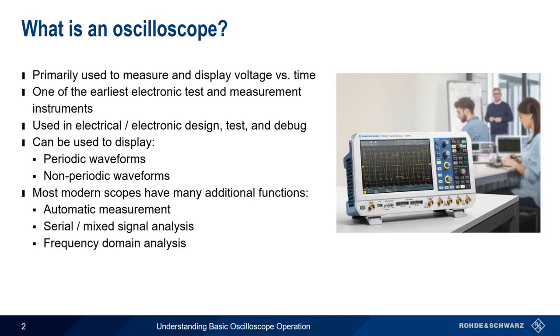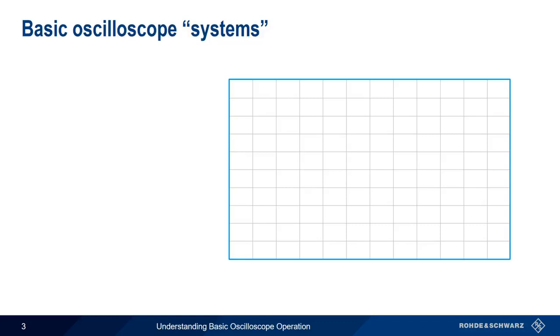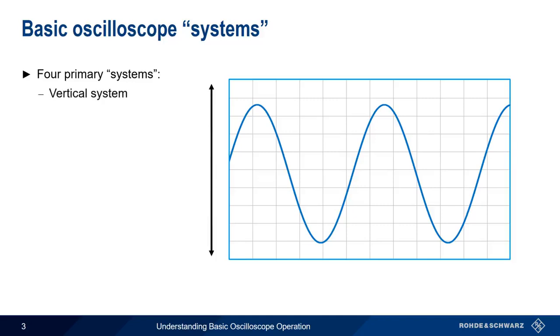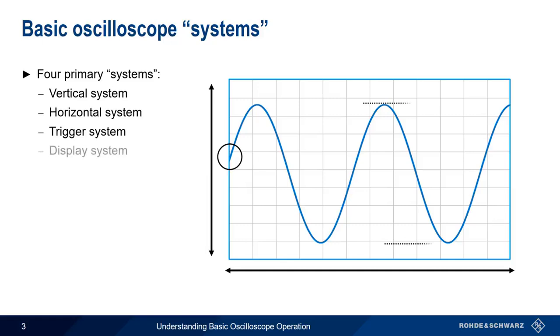In this presentation, we'll explain the settings used to make basic analog voltage versus time measurements using an oscilloscope. For the sake of simplicity, we're going to talk about four systems in an oscilloscope, since we make measurements and display the results by adjusting the settings of each one of these systems. These systems are the vertical system, the horizontal system, the trigger system, and the display system.